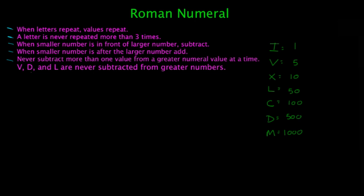Values that are never subtracted from greater numbers is going to be V, D, and L. And that's because if you have V, X, that's going to be 5 subtract 10. But that value is going to be 5 anyway. So you would never have that. You would just have V. So just remember that V, D, and L are never subtracted from each other.